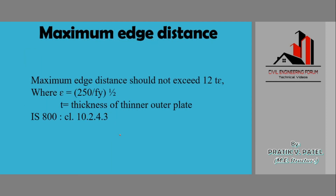For maximum edge distance, the value should not exceed 12 × t × ε, where ε = (250/fy)^(1/2), fy is the yield stress, and t is the thickness of the thinner outer plate. If three plates are used, the outermost two are considered and the thinner one's thickness is taken. This is given under IS 800:2007, Clause 10.2.4.3. You don't need to memorize the formula — just know where to find it in the IS code.